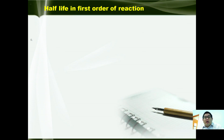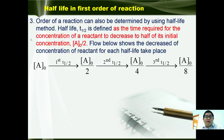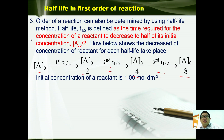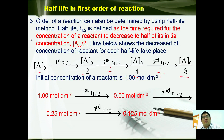A half-life is the time taken for the concentration of a reactant to decrease to half of its initial concentration. The flow chart shows the decrease of concentration in each half-life: starting from A₀, after the first half-life you have A₀/2, the second gives A₀/4, and the third gives A₀/8. For example, if the initial concentration is 1.0, after the first half-life you get 0.5, second half-life 0.25, third half-life 0.125, and so on.